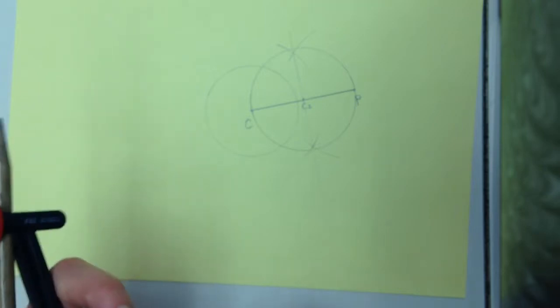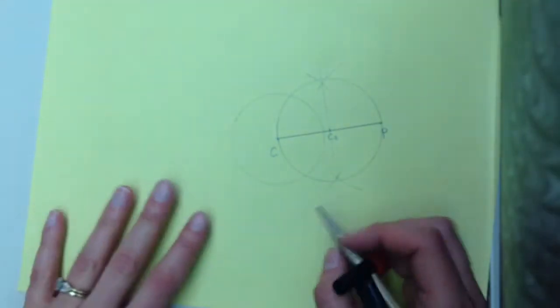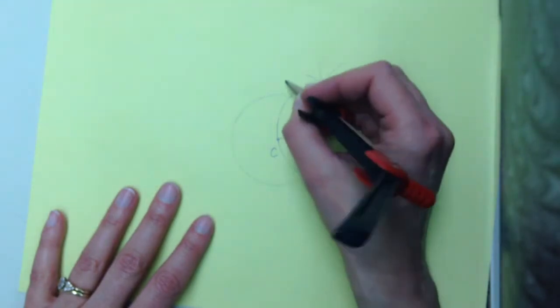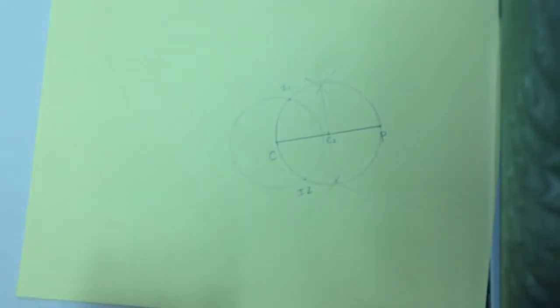And so now the important part of this construction is where the two circles intersect. These two points, where they intersect, I'll put intersection one and intersection two, are where the tangent lines can be drawn.